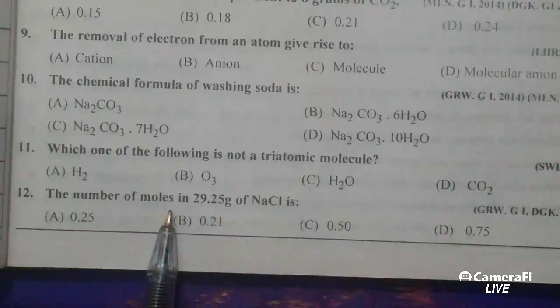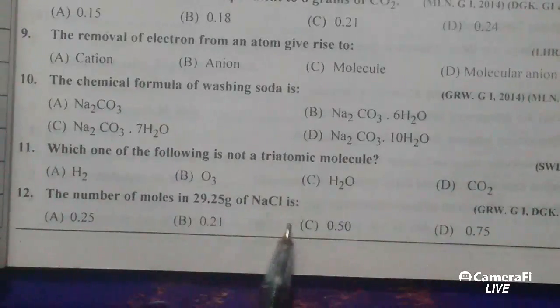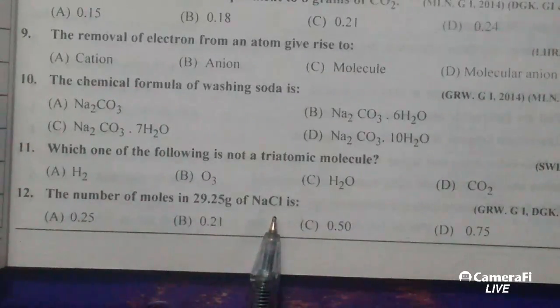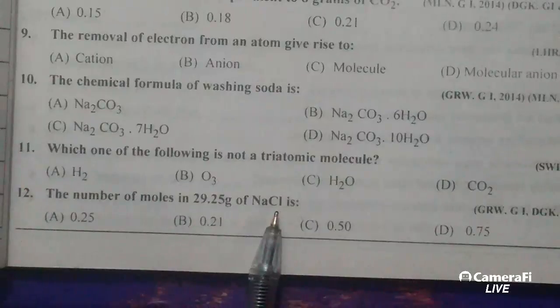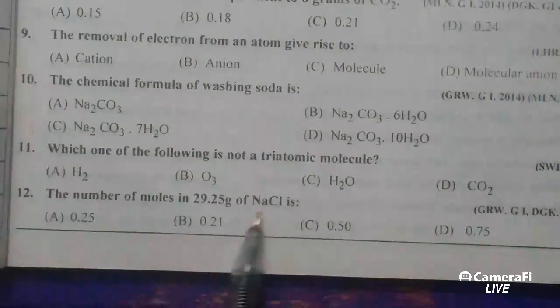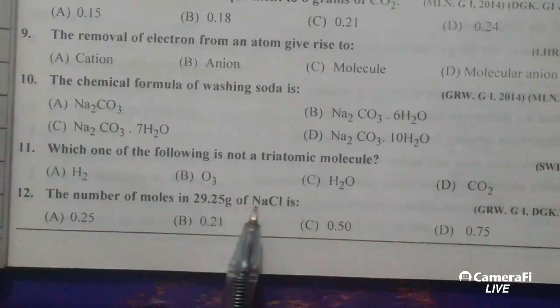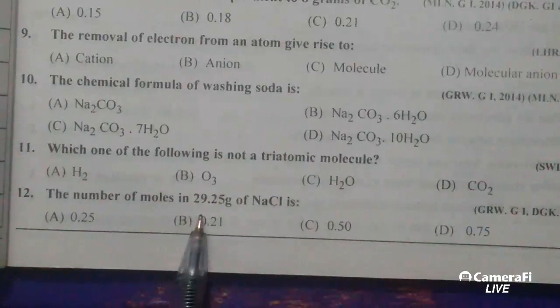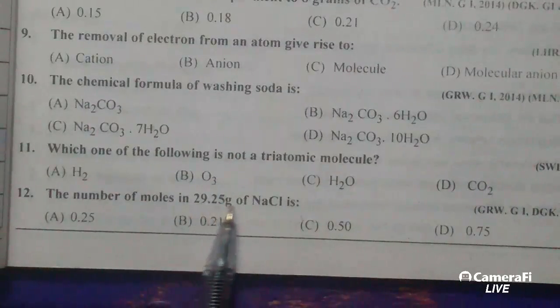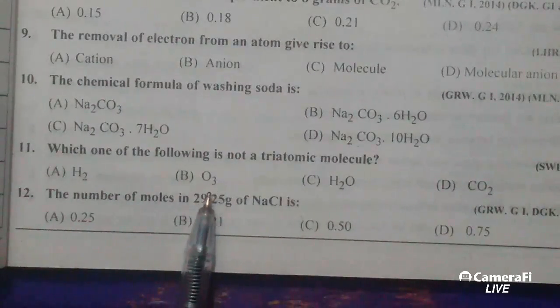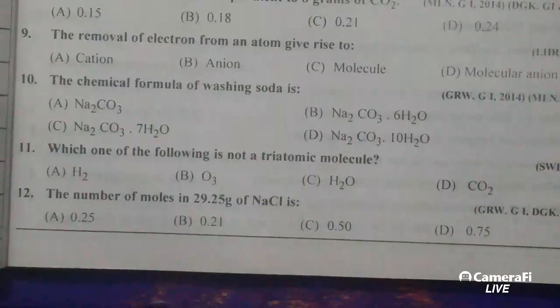The number of moles in 29.25 grams of NaCl. NaCl کا molar mass, sodium is 23 and chlorine is 35.5. 23 and 35.5 plus gives 58.5. This is half of 58.5, so half mole which is 0.5.